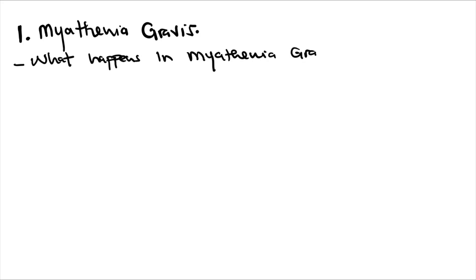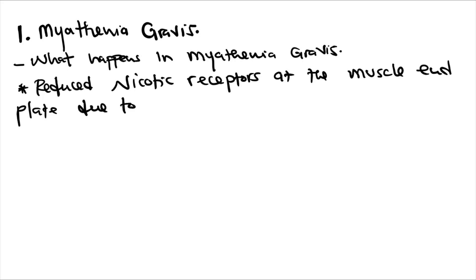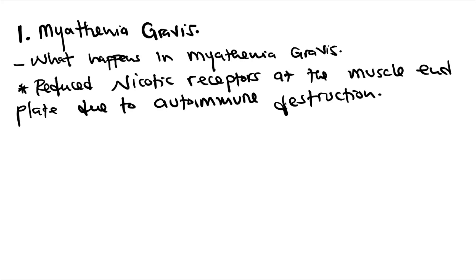In myasthenia gravis, there is a reduction of nicotinic receptors at the muscle end plate due to autoimmune destruction. Autoimmune destruction simply means your own antibodies are destroying your nicotinic receptors. This results in reduced nicotinic receptors, which will lead to decreased muscle contraction.